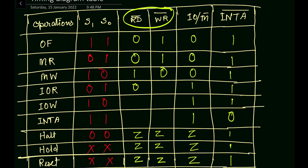For input/output read, RD bar is zero. For input/output write, WR bar is zero and RD bar is one. For interrupt acknowledgement, both RD bar and WR bar are kept high because there is no memory read or memory write operation during interrupt acknowledgement — so neither signal receives an active low zero voltage.